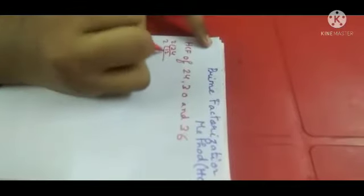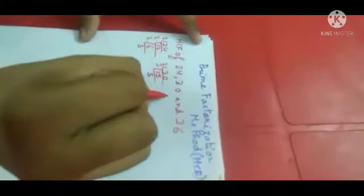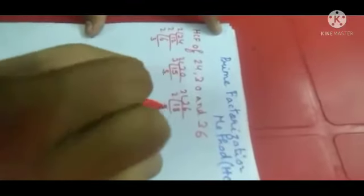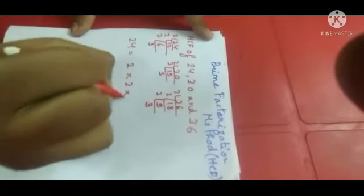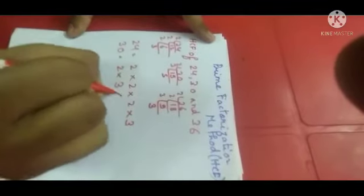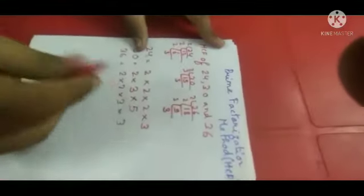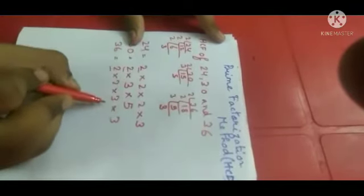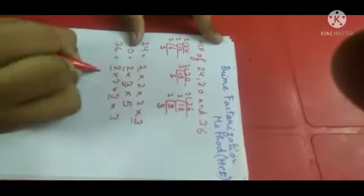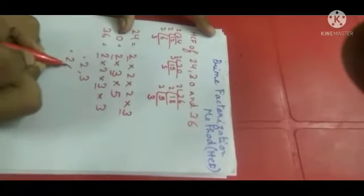Finding the prime factors: 24 equals 2 cross 2 cross 2 cross 3, and 30 equals 2 cross 3 cross 5, and 36 equals 2 cross 2 cross 3 cross 3. Now we find the common factors. There are common 2s and common 3s across all three. The common ones are 2 and 3. Since HCF is one number, we multiply them: 2 times 3 equals 6. So the HCF is 6.